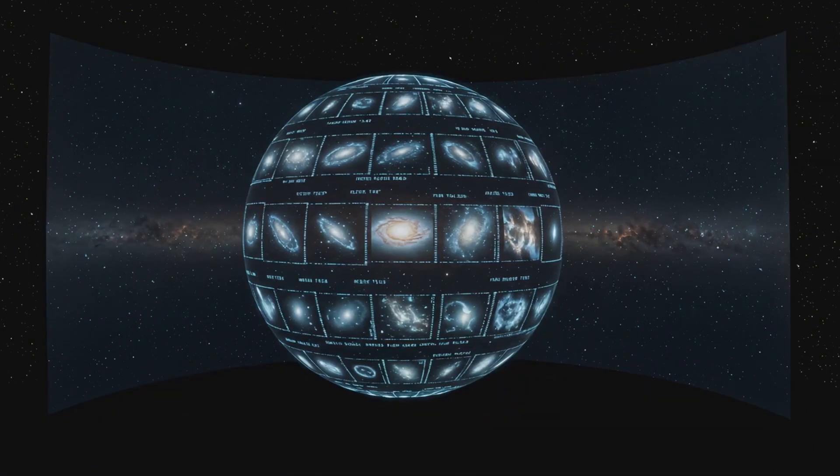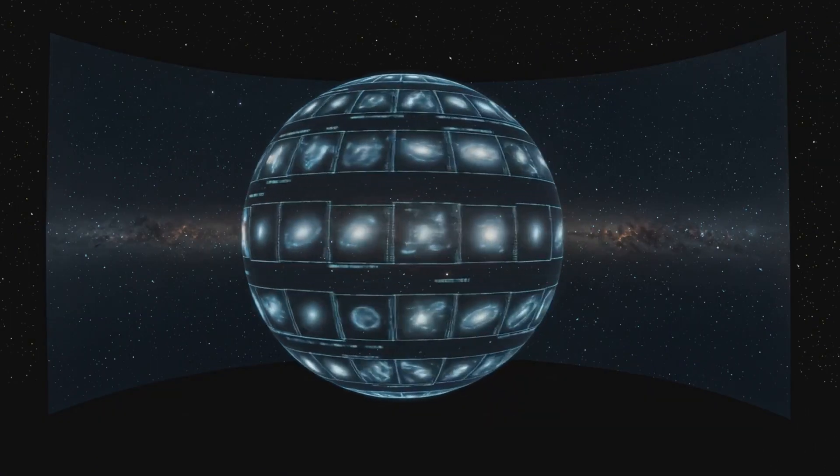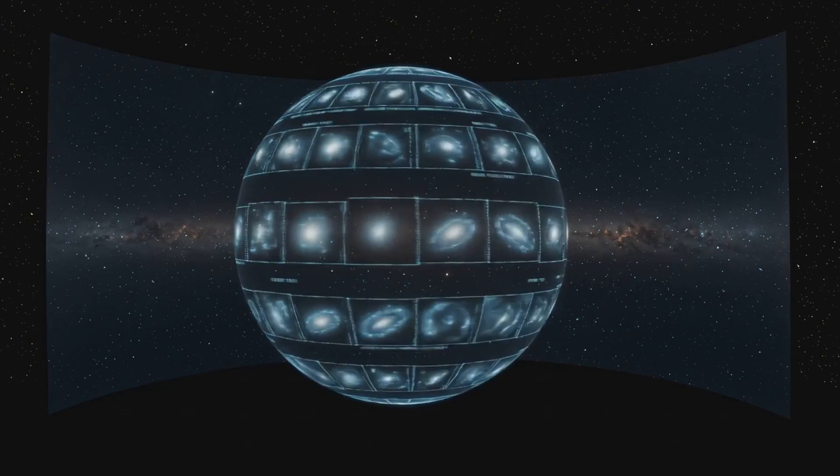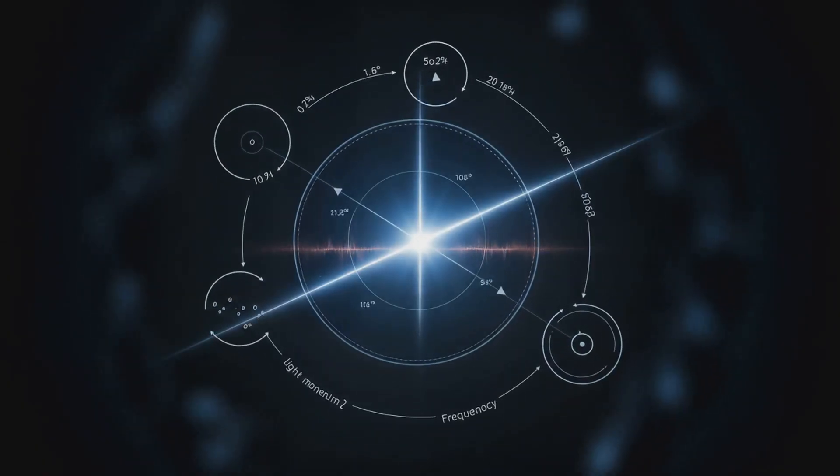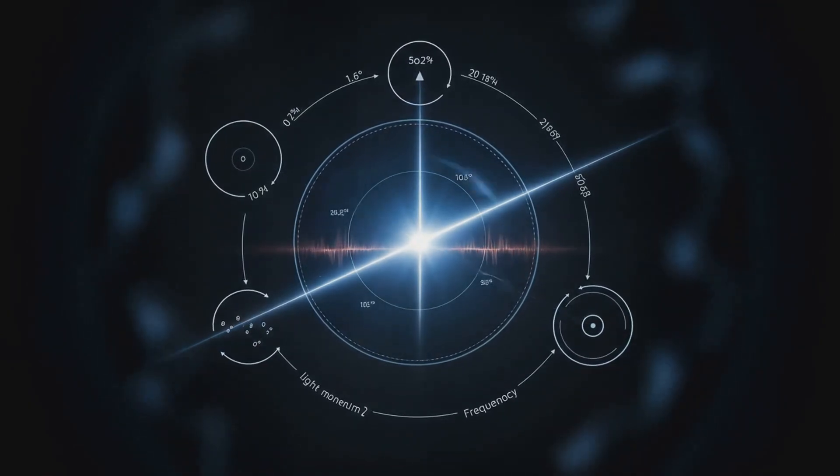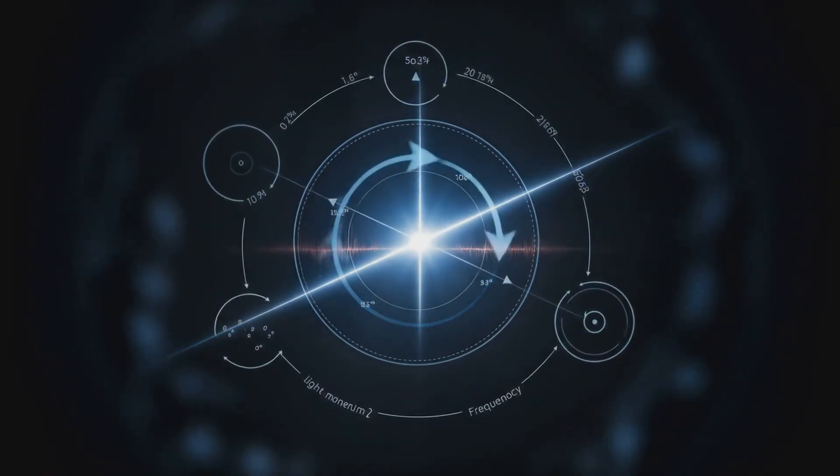The universe you experience isn't built. It's etched, stamped frame by frame onto a holographic screen by rotating vectors of light. Each of those light vectors is defined by five things: its position, its momentum, its frequency, its phase, and its spin angle.